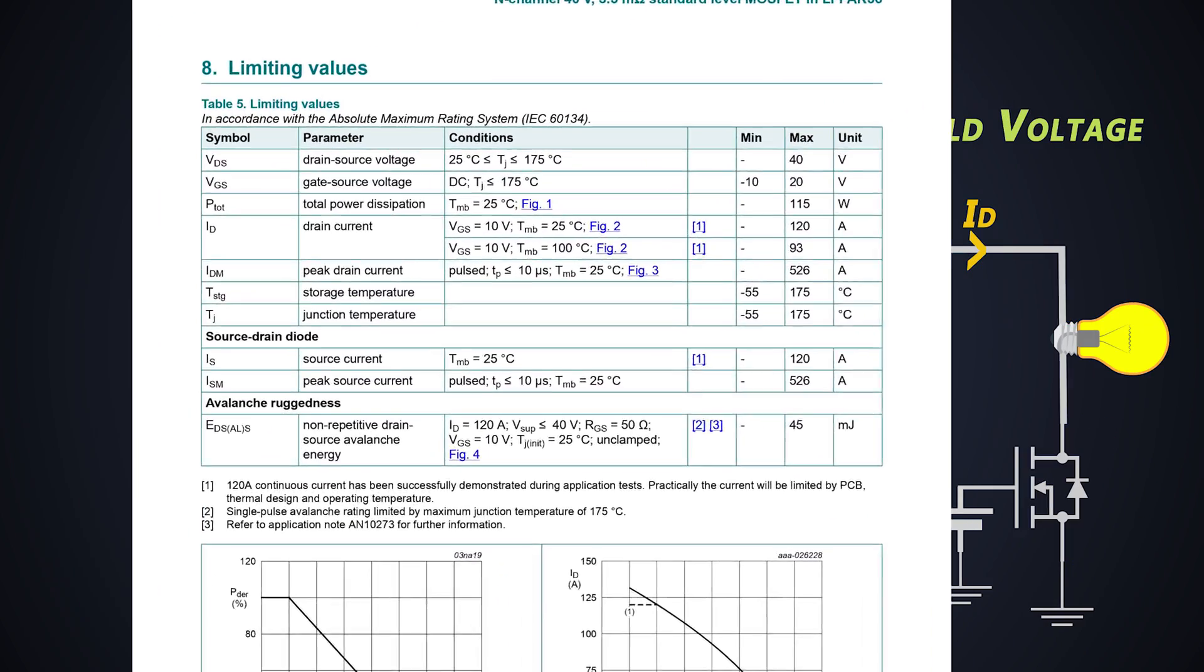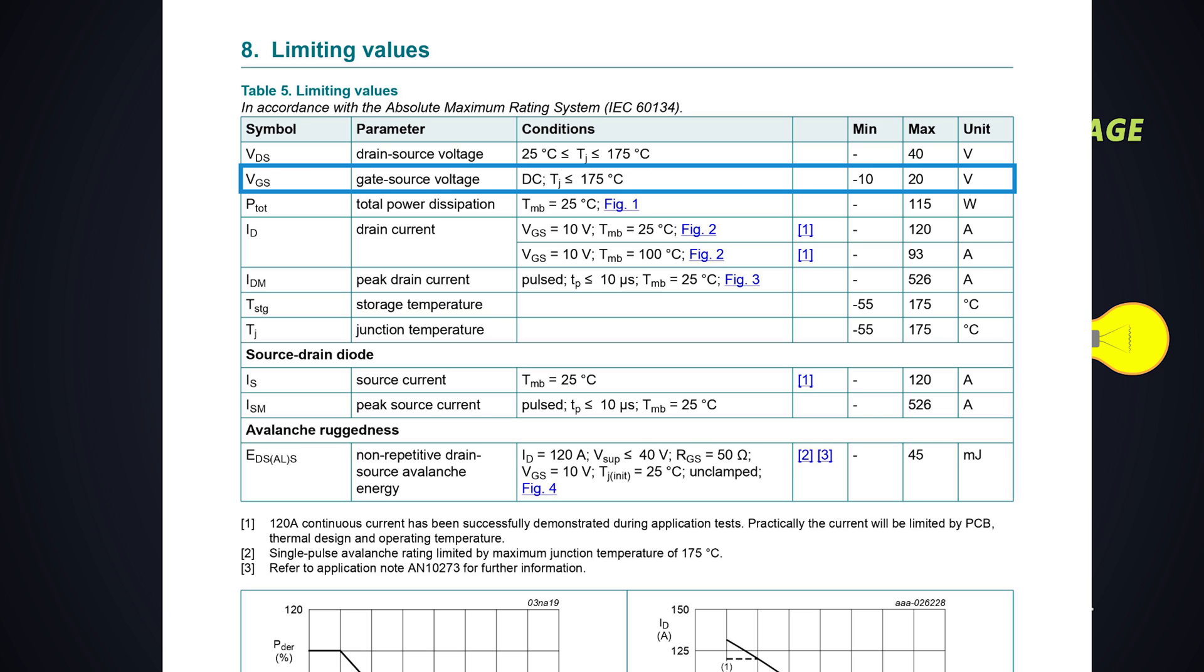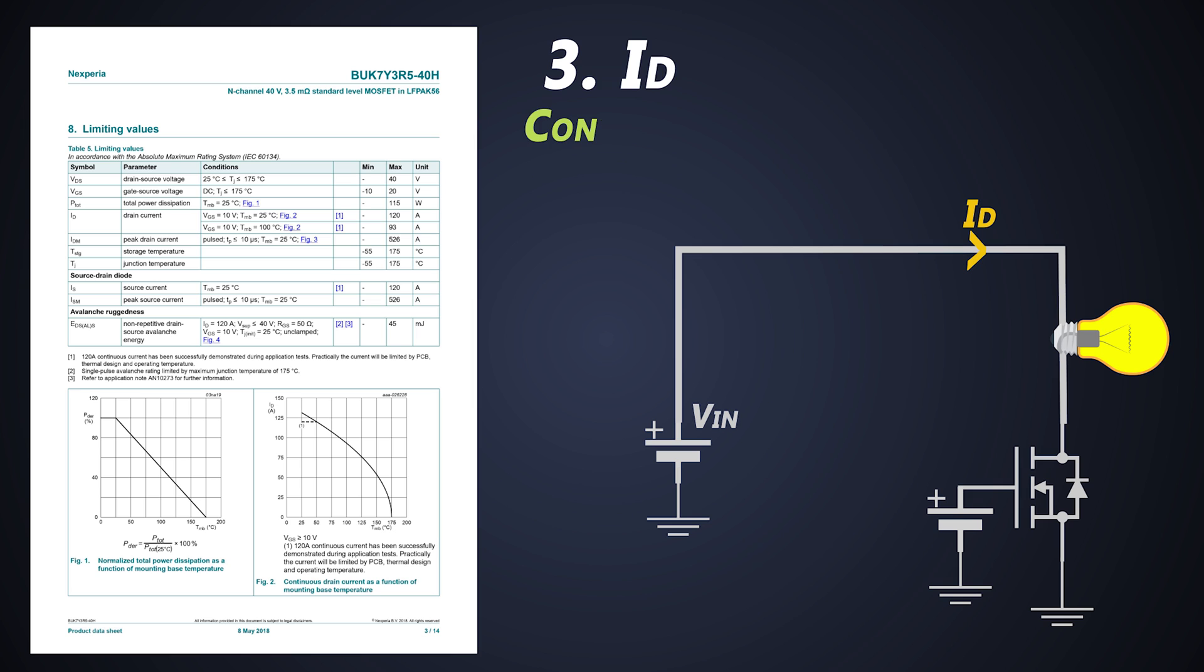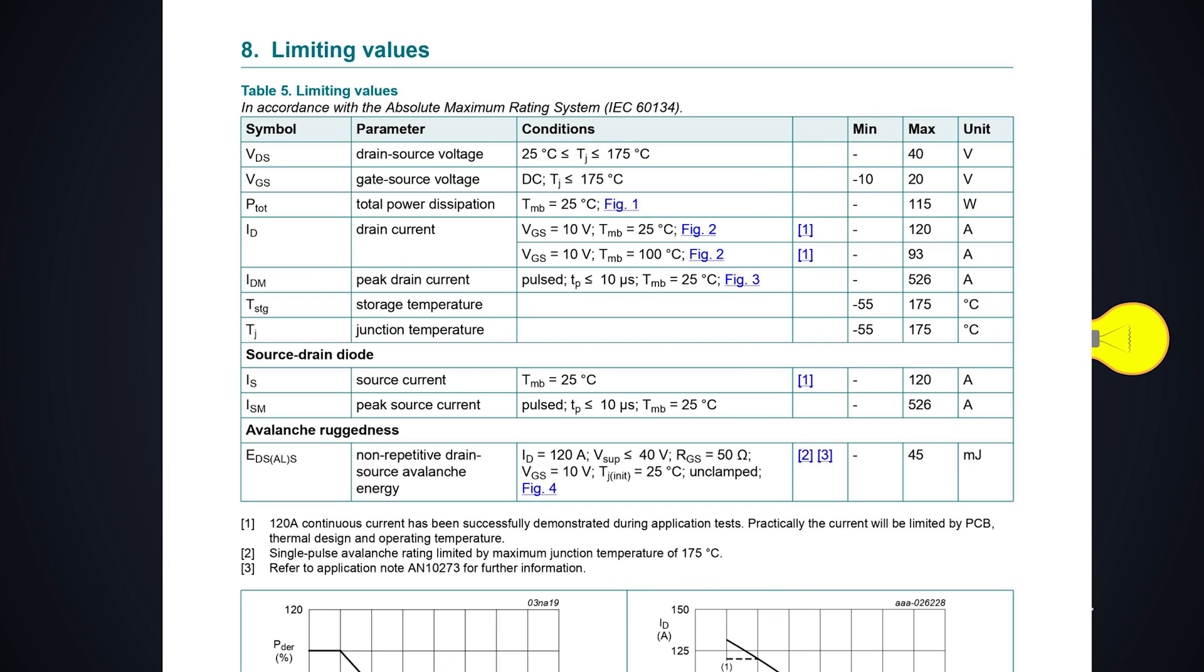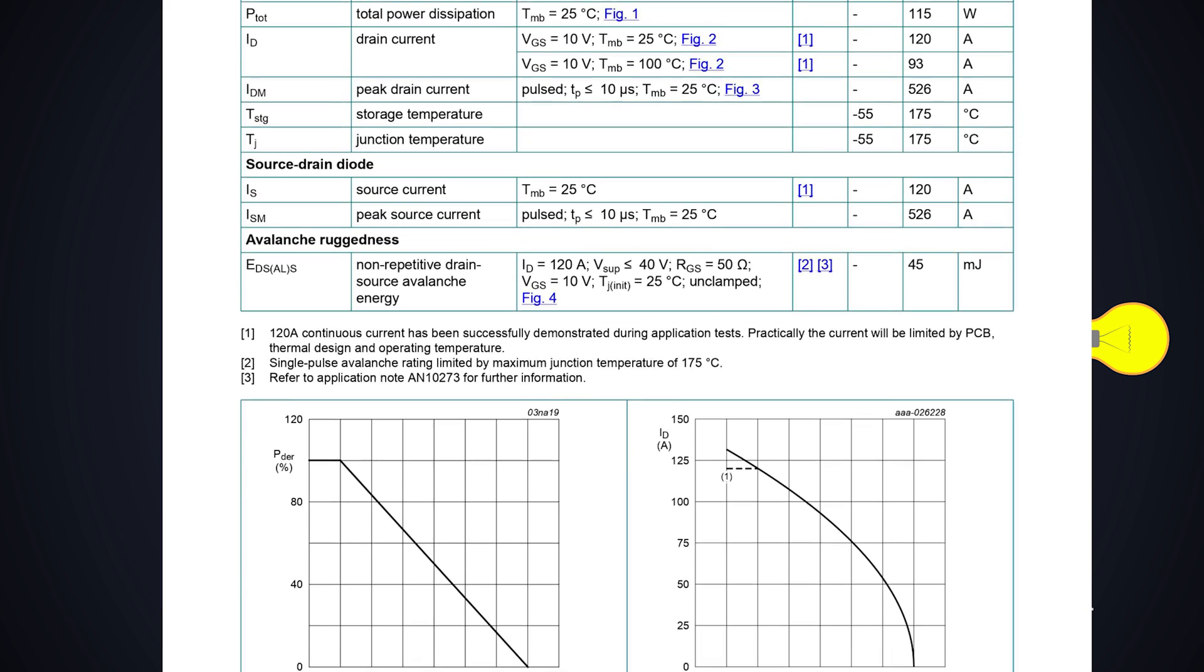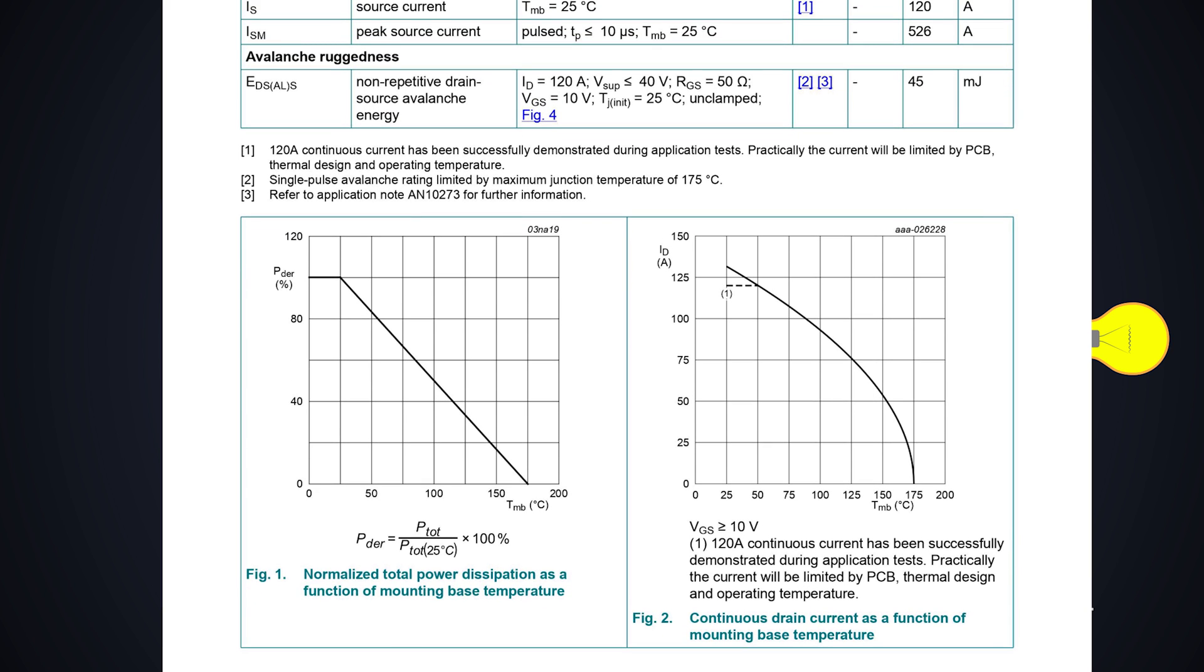We can give gate voltage in the range of minus 10V to 20V to this MOSFET. Next is the continuous drain current. It is the maximum continuous current which a MOSFET can carry when the MOSFET is turned on. This MOSFET can carry 120 amperes when we give 10V VGS but at the junction temperature of 25 degrees Celsius and 93 amperes if the junction temperature is up to 100 degrees Celsius. This drain current capability varies with the change in junction temperature and VGS.